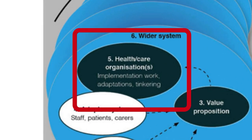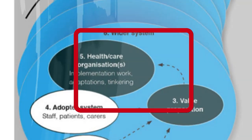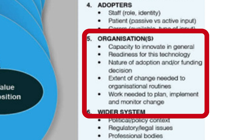The organisational domain is probably the largest domain in some ways. Some organisations are just not ready for new innovations. With this domain, we're looking at the organisation's general capacity to innovate, how ready it is for technology-supported change, and how easy the funding decision will be. We also look at implications for team routines and what work is needed to implement it. The more complicated new tech is, the longer, more expensive and difficult it'll be to implement. The more complex, the less likely it is to succeed at all.